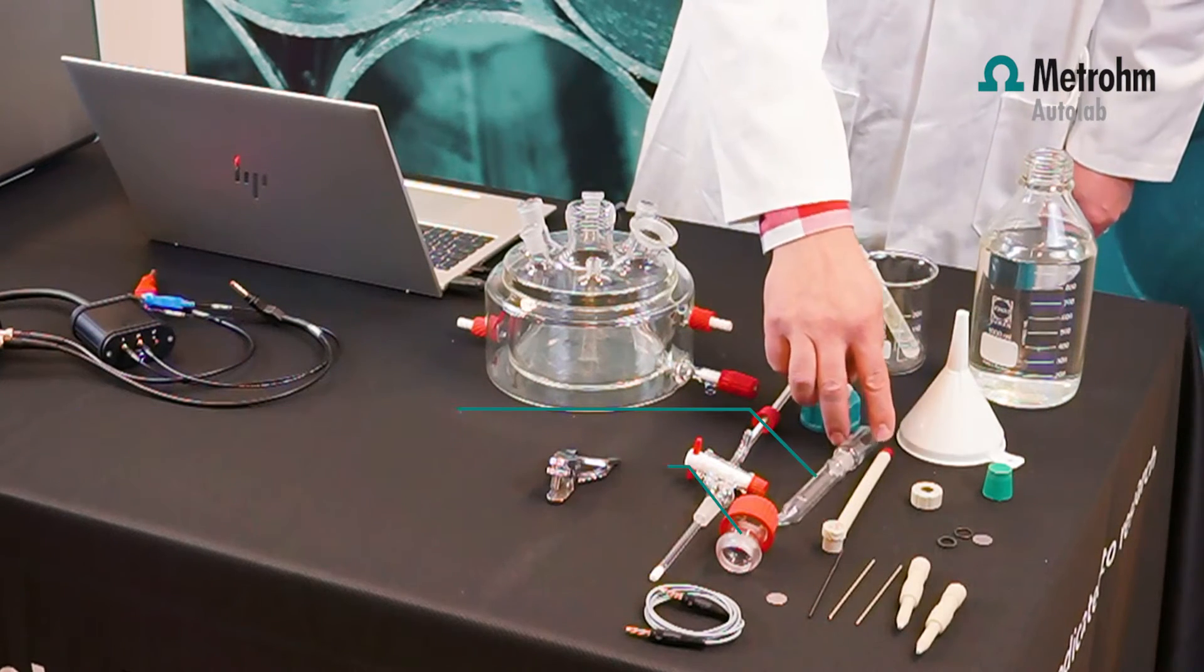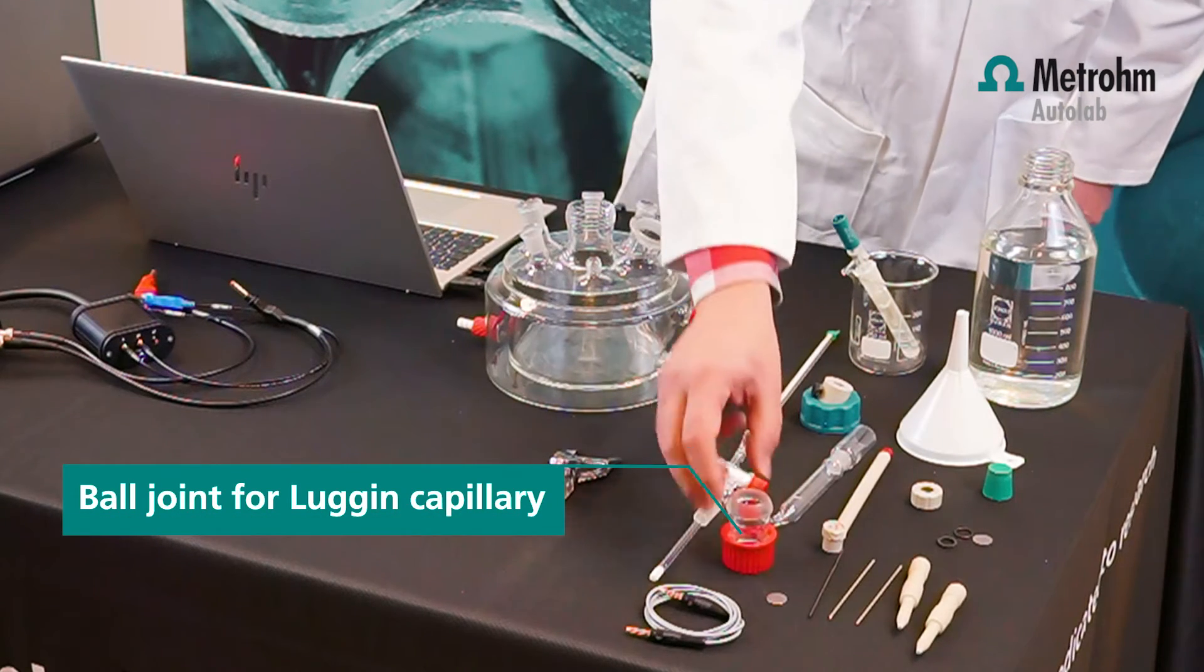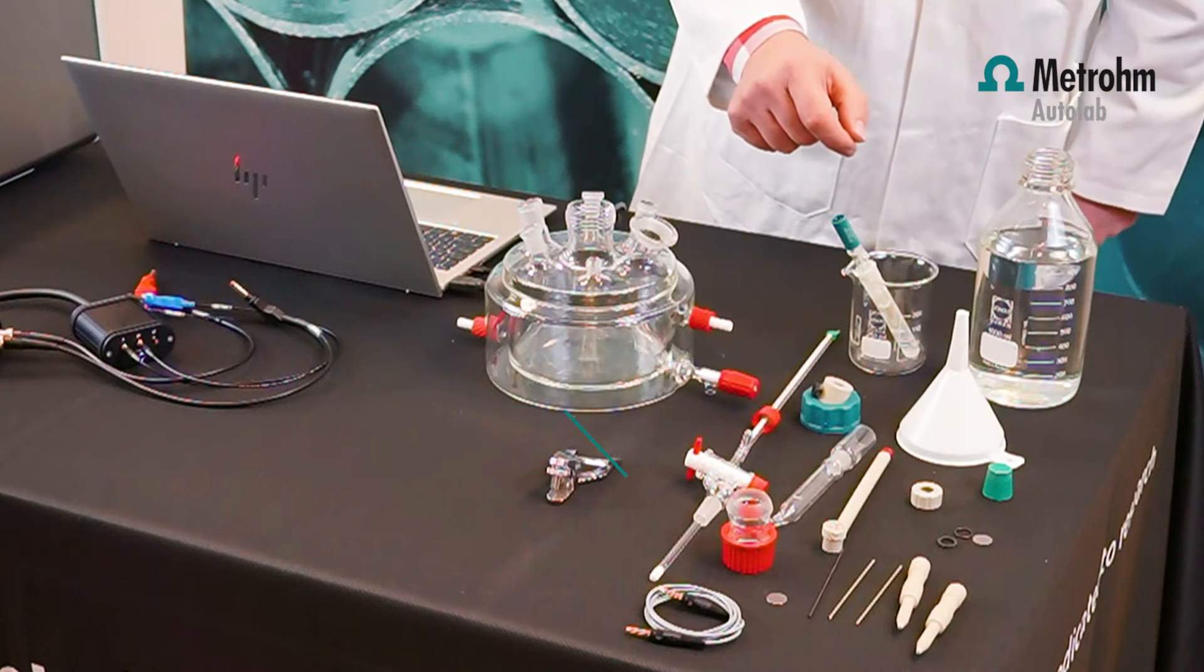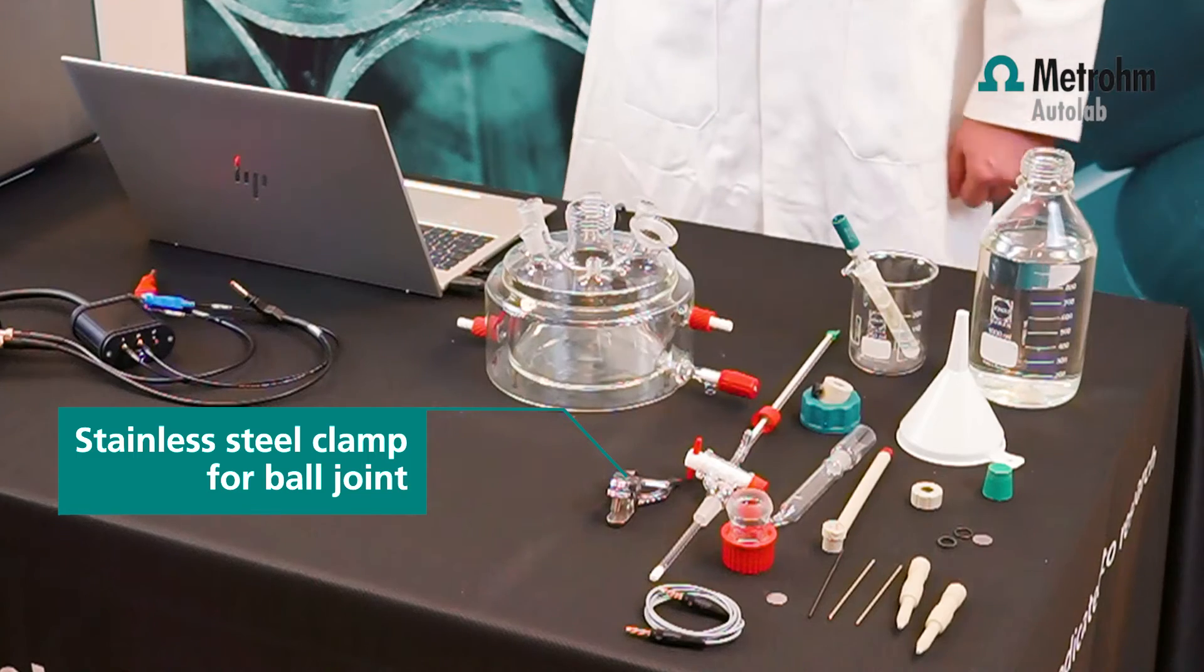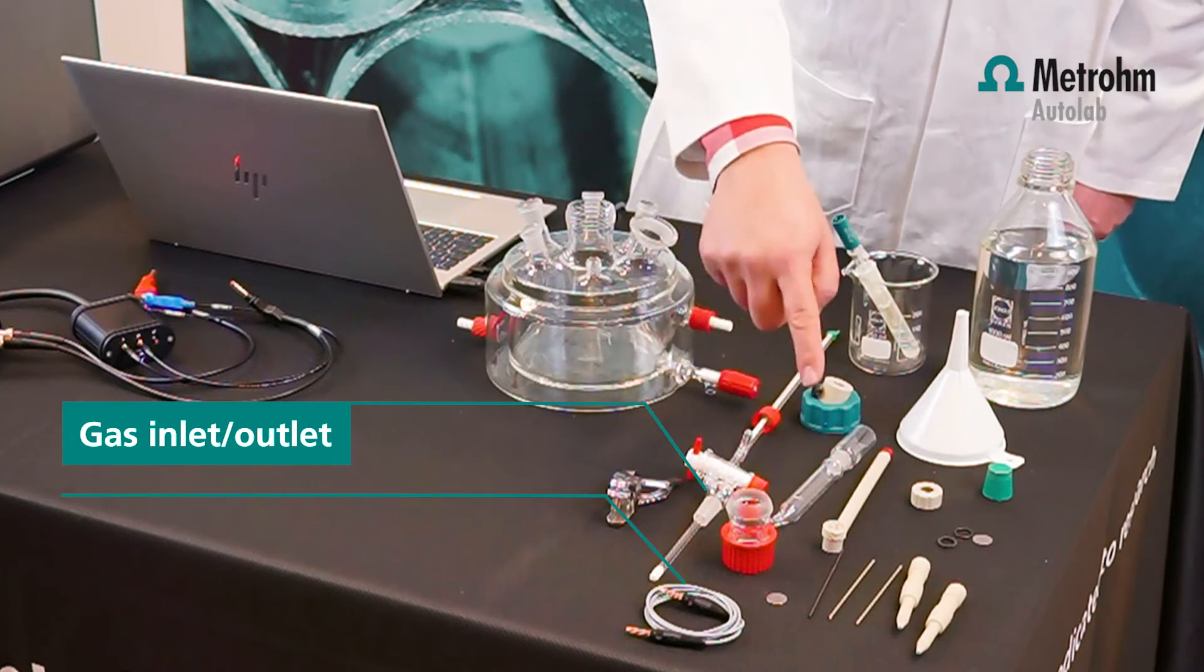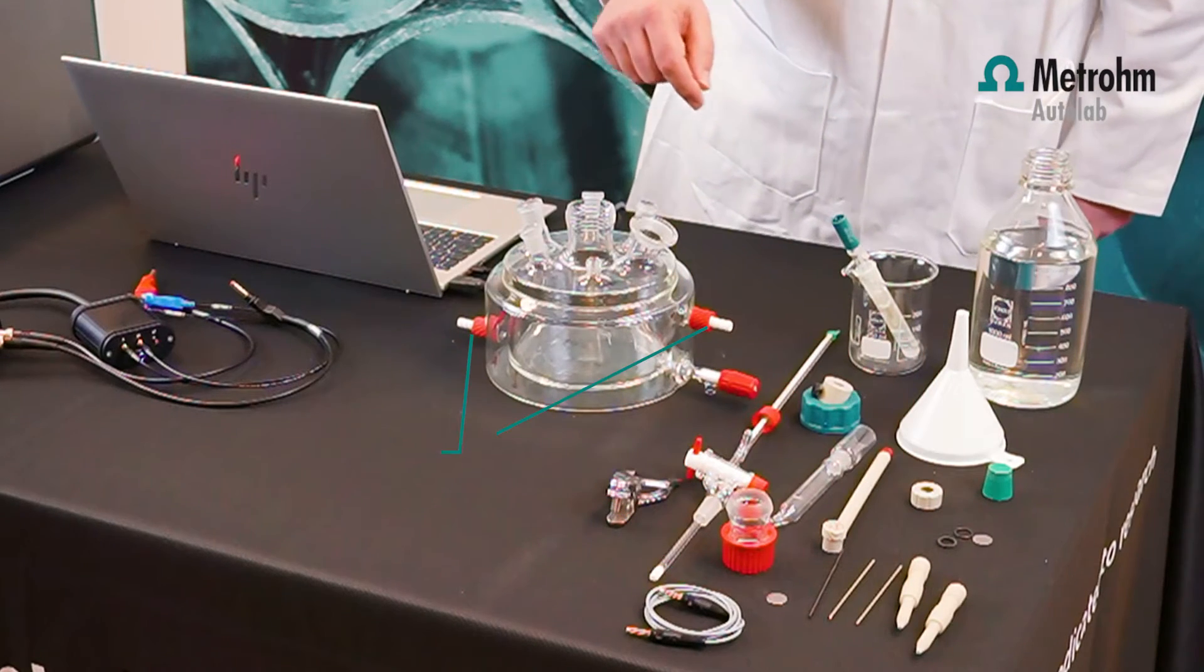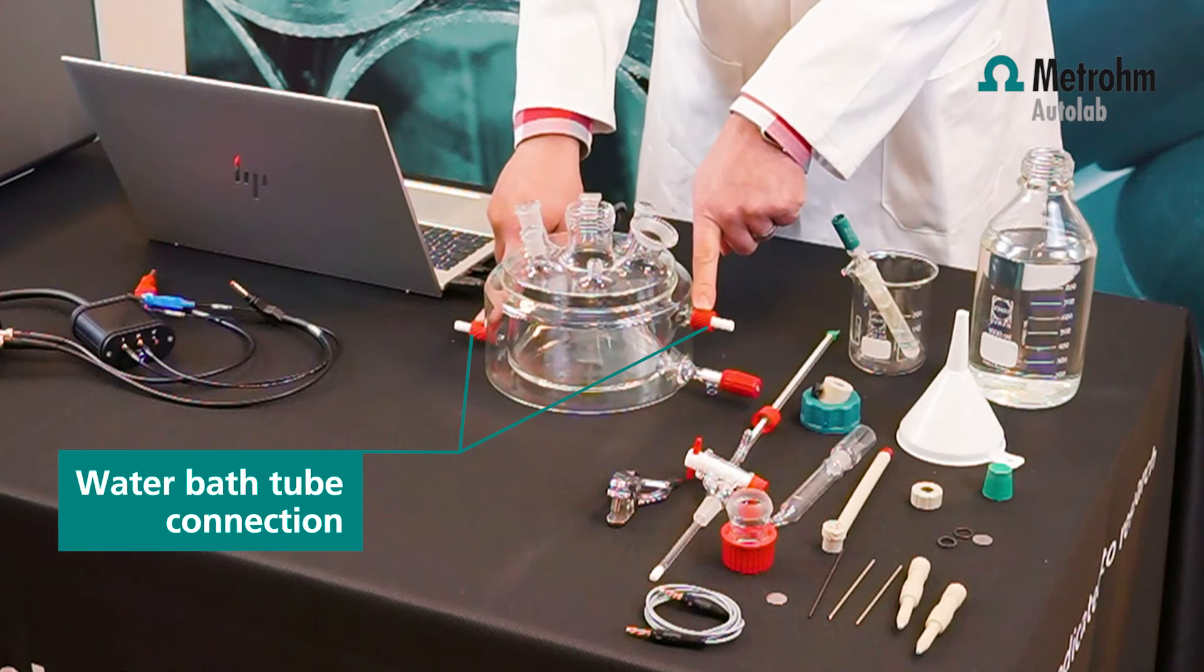A Luggin capillary, the glass part here. A ball joint to fix the Luggin capillary to the surface of the working electrode, and a stainless steel clamp to hold the Luggin capillary in position. We have a gas inlet and outlet, a cable to connect the two counter electrodes together, some open tops, and a water bath connection if you want to heat up the electrolyte.